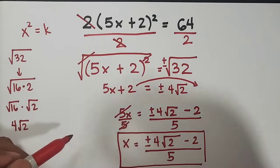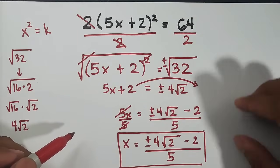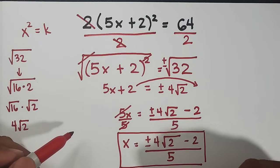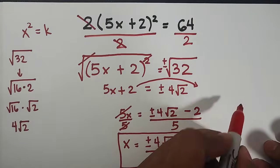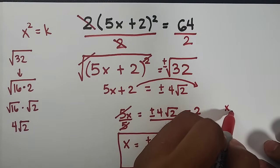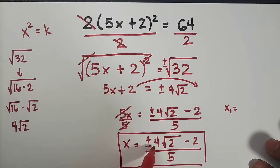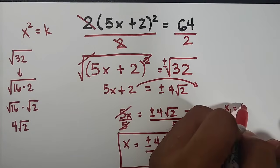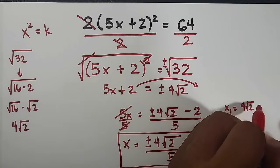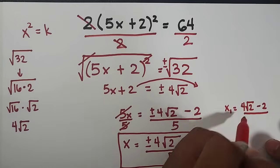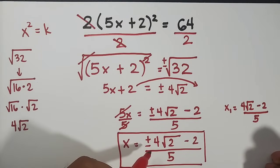But if you want to identify the value of your first root individually separately from your second root, let's say you have your x sub 1, your x sub 1 is equal to the positive 4, 4 square root of 2, 4 square root of 2, minus 2 over your denominator 5. This is the first root, okay?